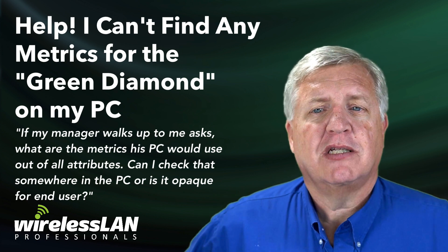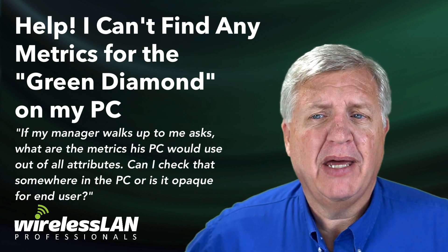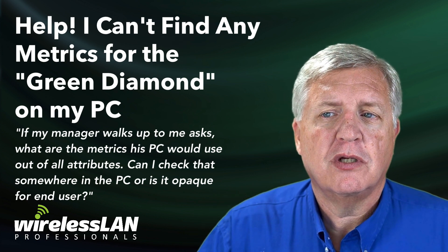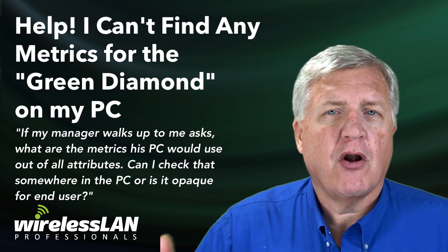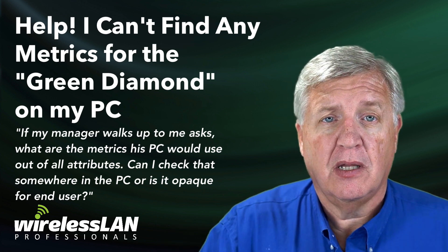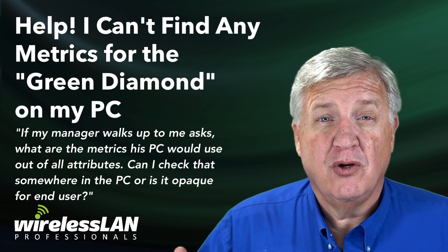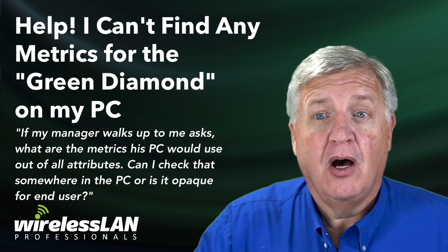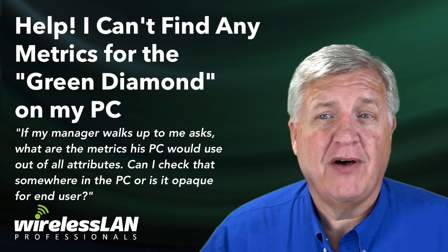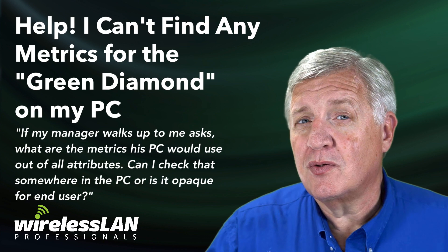If my manager walks up and asks me what are the metrics his PC could use to figure out all the variables used in the green diamond, the roaming algorithm on his machine, is there somewhere you can check on the PC or laptop or device to see what those are?